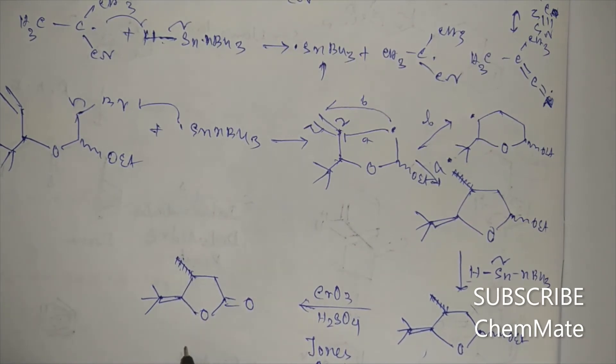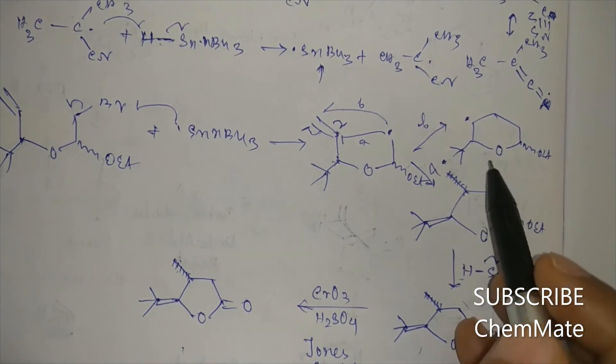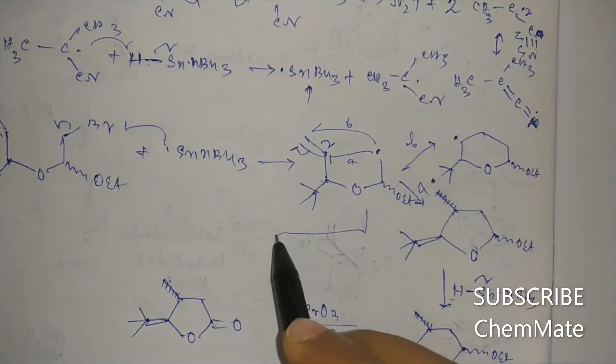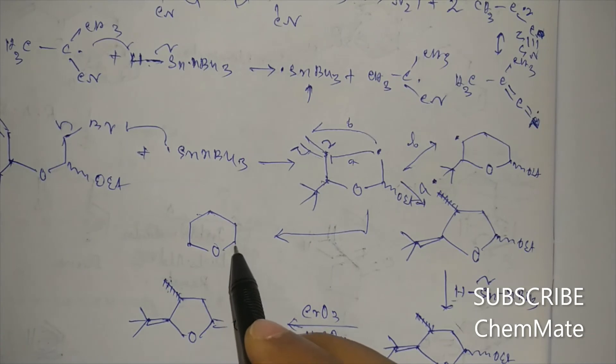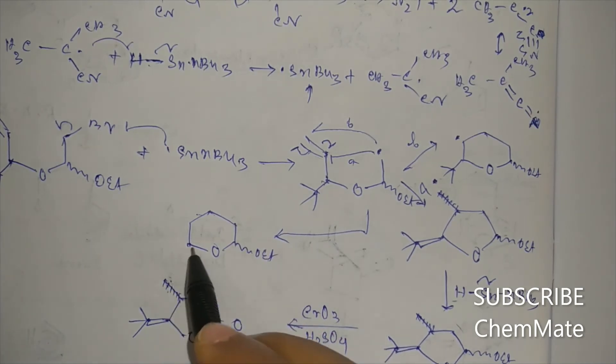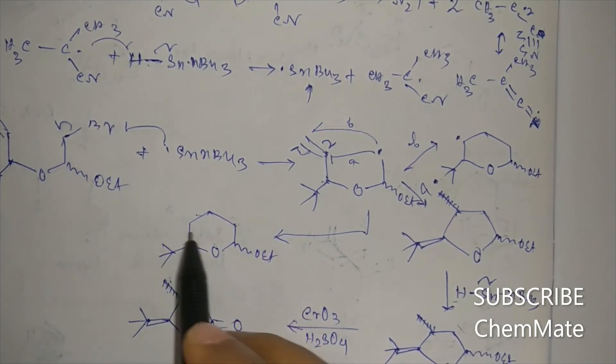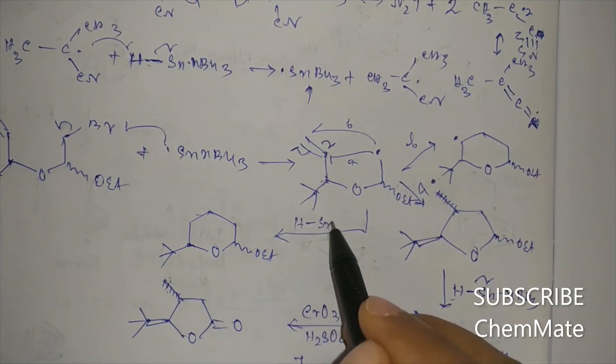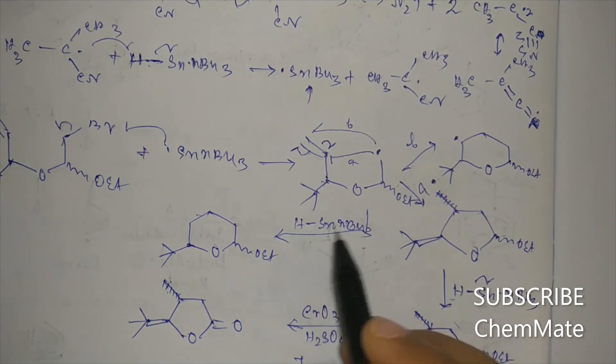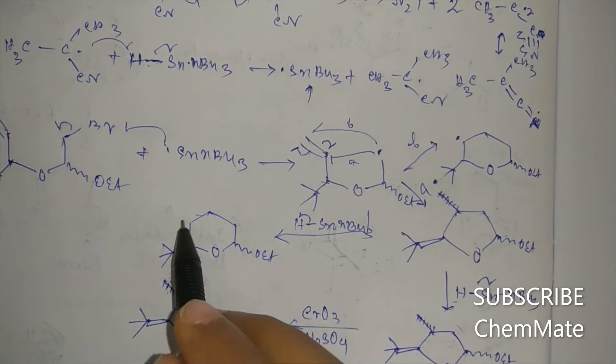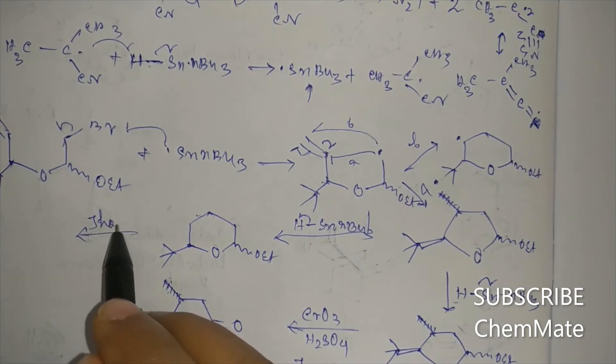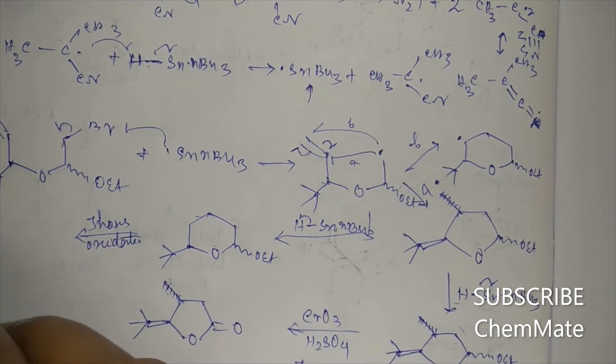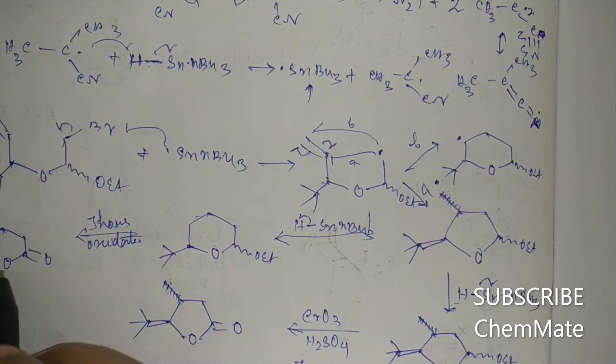So this will be one product. And another product will be from this. From this we will get OEt. It will take one hydrogen from HSNBu3 and convert it into this. Then after Jones oxidation, it will be a keto, that means it will be an ester.